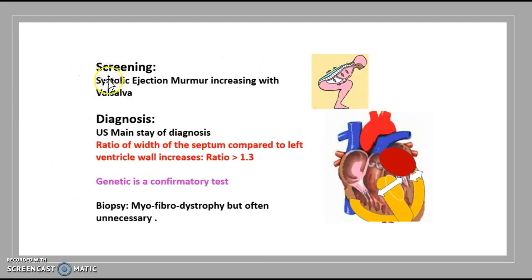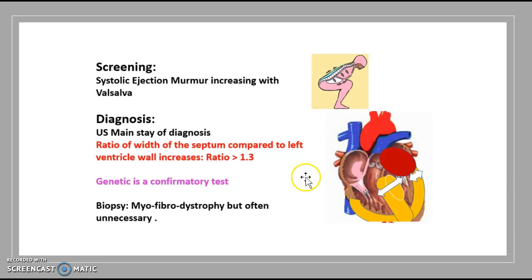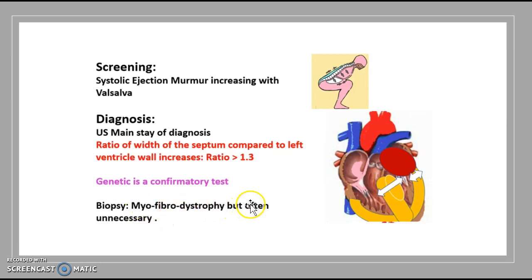When screening, you are going to see systolic ejection murmur increasing with Valsalva. The diagnosis mainstay is ultrasound — a ratio of the width of the septum compared to the left ventricle greater than 1.3. There is also a genetic confirmatory test to confirm the diagnosis. Biopsy shows mild fibrodystrophy, but it is often unnecessary and only occurs in some small instances.